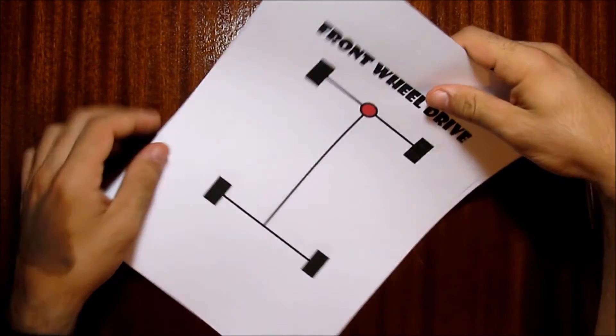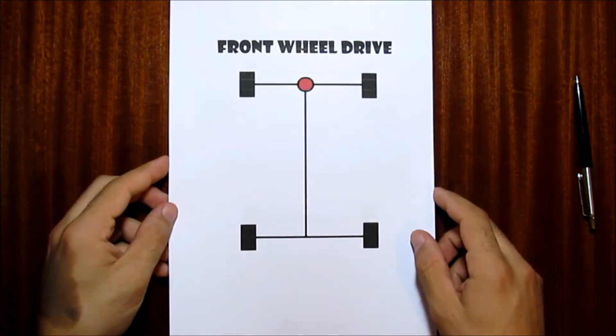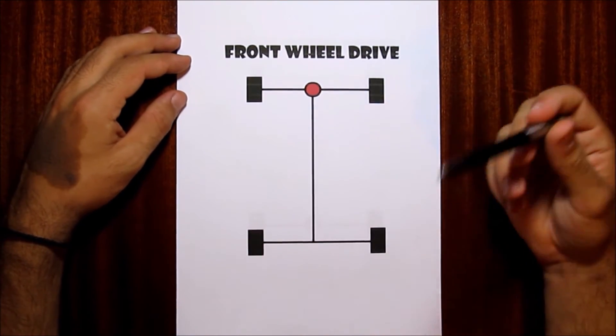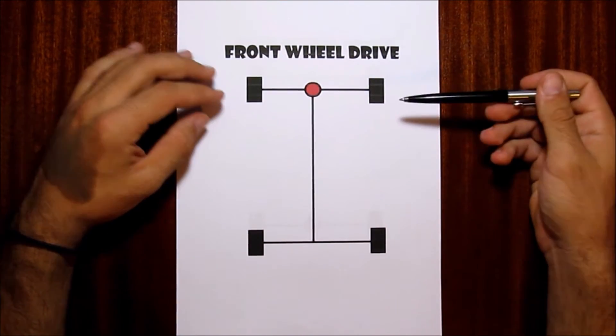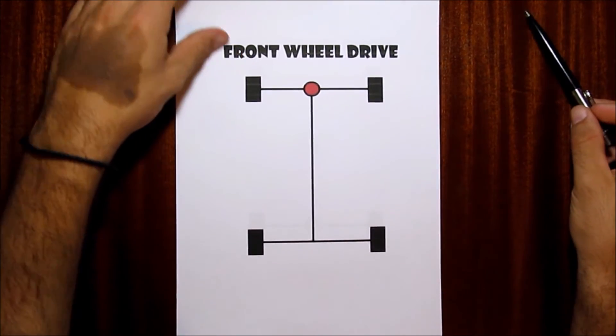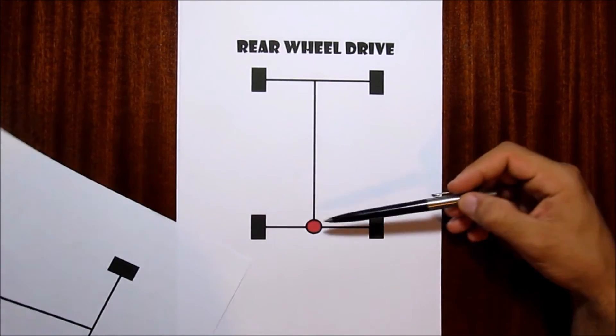Now in a two wheel drive case we only have one differential since only two wheels are powered by the engine. If your car is a front wheel drive then the differential is on the front axle. If your car is a rear wheel drive then the differential will be on the rear axle.